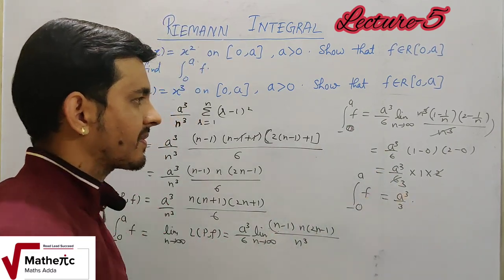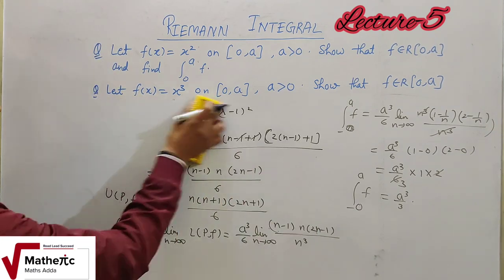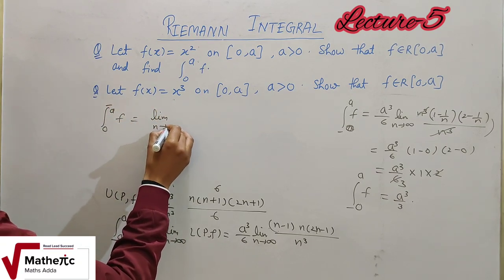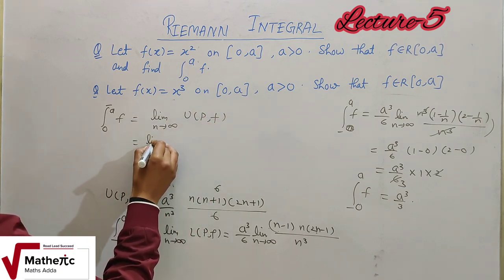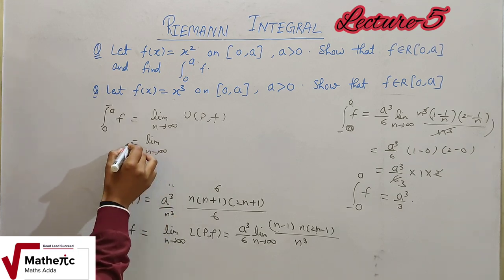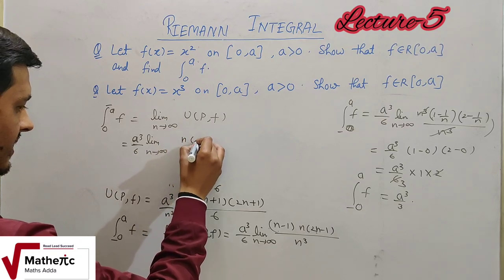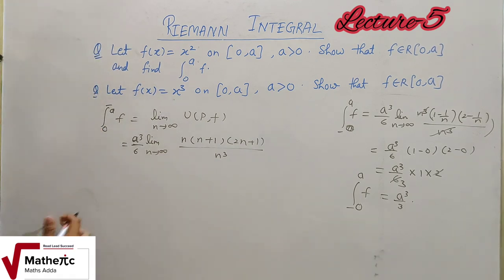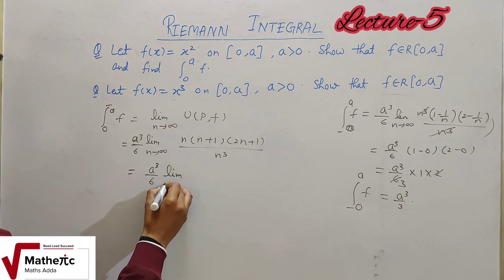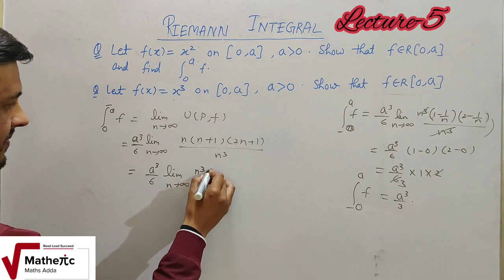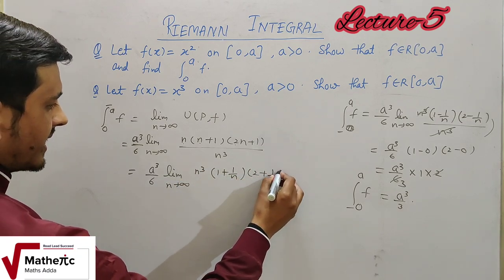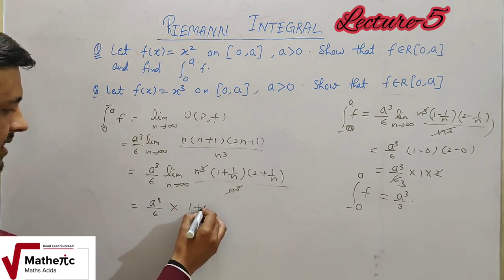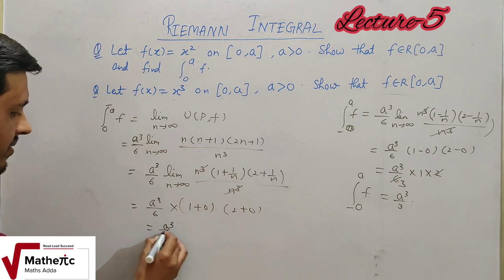The lower integration from 0 to a is A³/3. Now for the upper integration, U(P,f) = (A³/6) · N·(N+1)·(2N+1)/N³. Taking the limit as n→∞ and factoring out N: A³/6 · (1 + 1/N)·(2 + 1/N). As N→∞ this gives A³/6 · 1 · 2 = A³/3. So the upper integration also equals A³/3.